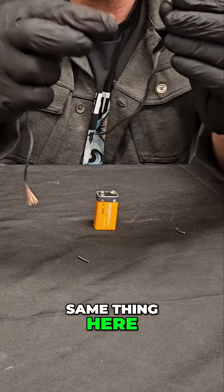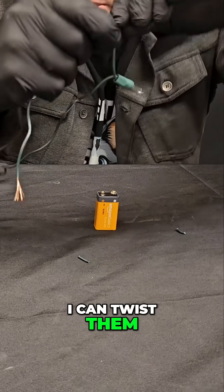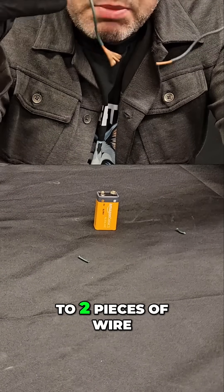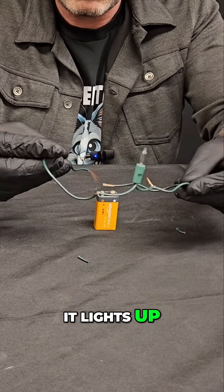I can do the same thing here. If I want to connect these two exposed copper ends together, I can twist them with my fingers around each other. Now I have a light bulb connected to two pieces of wire. I can touch these to each end of my battery and look at that, it lights up.